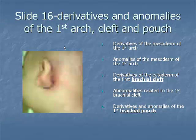Anomalous development thus produces atretic Eustachian tubes, common in children with recurrent otitis media; diverticula of Eustachian tubes; absence of tympanic cavity or mastoid antrum and cells; double or perforated tympanic membrane; bifid and trifid tongue; and bronchogenic nasopharyngeal cysts.